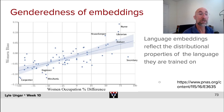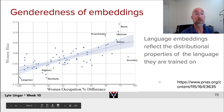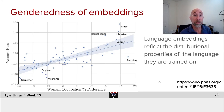Secretaries: very high. Carpenters: very low. Engineers: quite male-dominated. Housekeepers and dancers: quite female-dominated. So this is an empirical observation about the world.